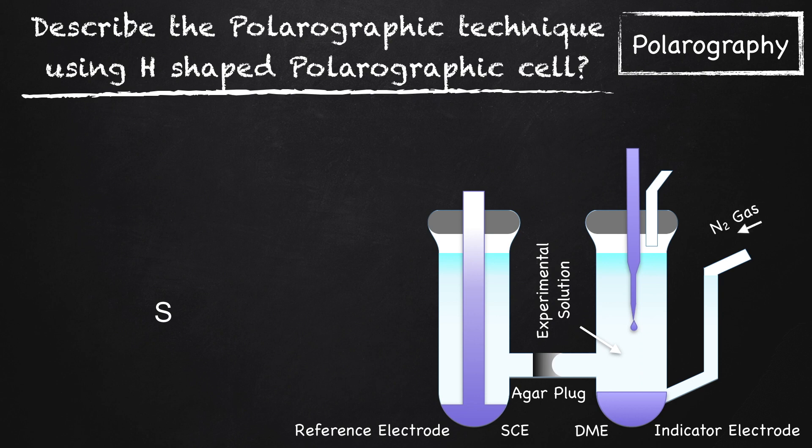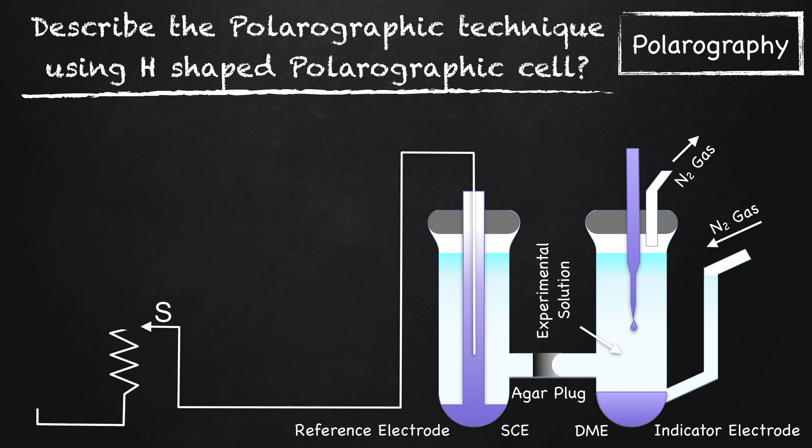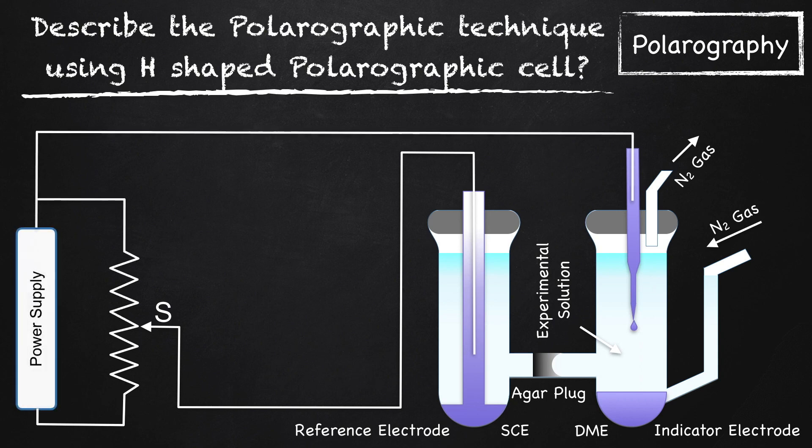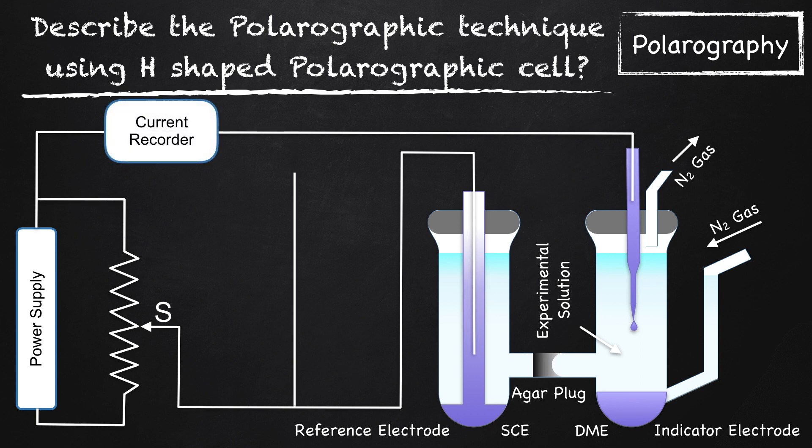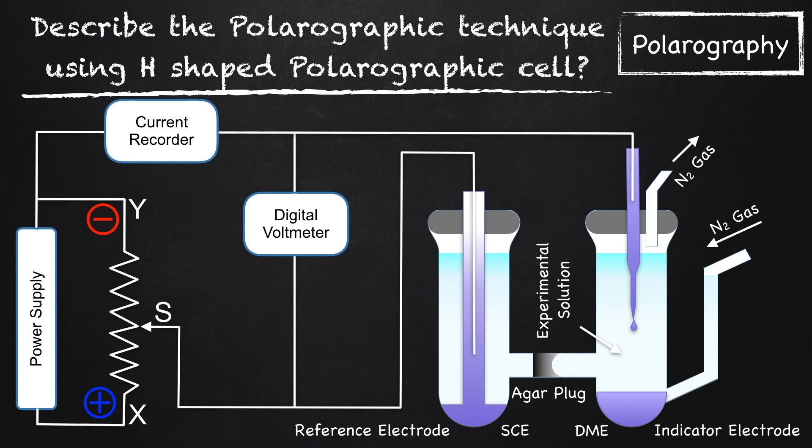Nitrogen gas is passed for about 10-20 minutes to remove dissolved oxygen from the experimental solution. The saturated calomel electrode or anode is connected to variable resistance and then to the positive terminal of the battery. A sensitive current recorder is connected in series, and a voltmeter is connected between cathode and anode. The height of the mercury reservoir is adjusted so mercury falls at the rate of 20-30 drops per minute.